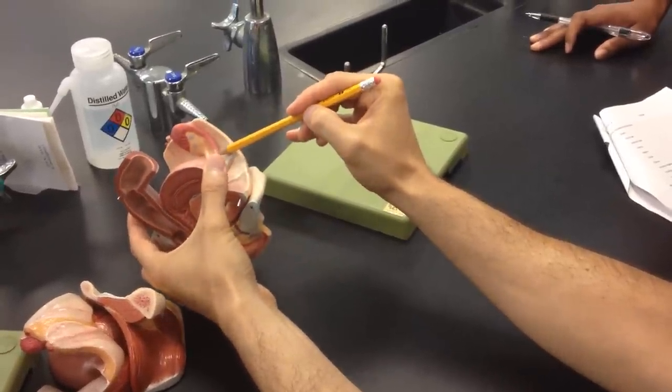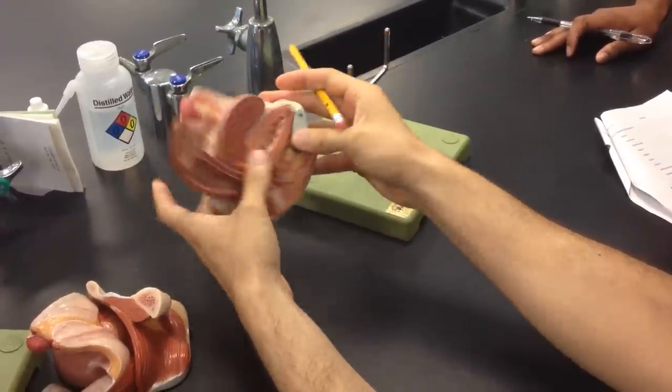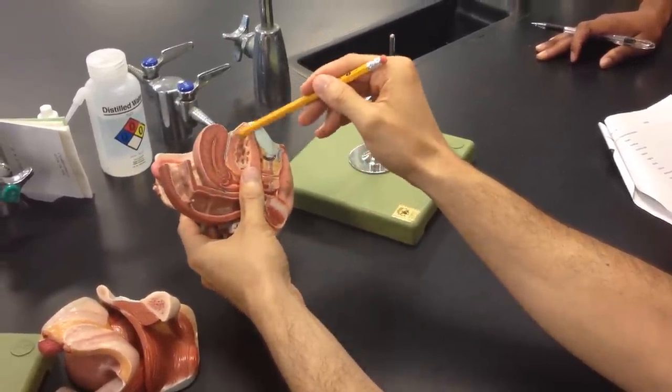So all of that is uterine tube. You see how now it's going inside this pouchy area? So that entire pouchy area, that's going to be the uterus.